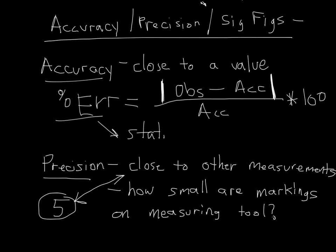Or you can think of precision as how small the markings are on your measuring tool. If I have a ruler that's in inches, those are going to be broader markings than if I have a ruler in centimeters. Precision can be how close you are to all your other measurements or how small the markings are on your measuring tool.